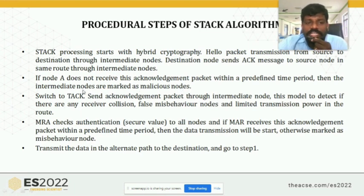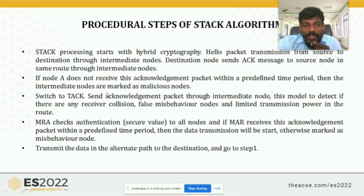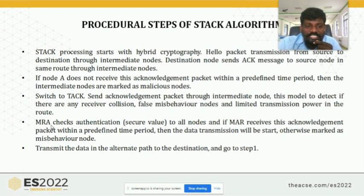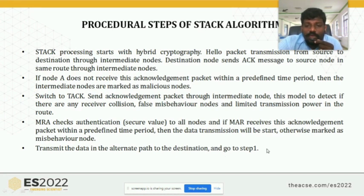If node A does not receive this acknowledgement within the preset time period, the intermediate node is marked as malicious. Again, the TACON method is activated to detect if there is any route collision, misbehavior, fault misbehavior node, or loss of transmission power in the route. If any such possibility exists, go to MRA — Misbehavior Report Authentication. MRA checks the secure value. Once the secure value is found, path establishment starts. If after three attempts you cannot receive the secure value, find the path again between source and destination and go back to step 1.